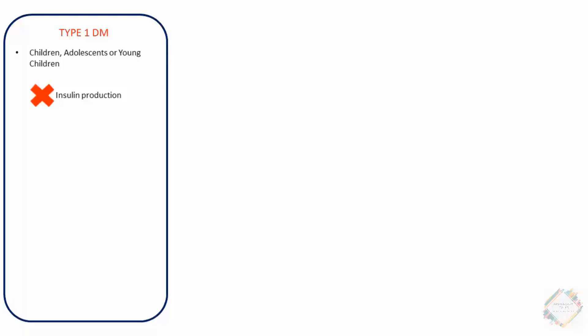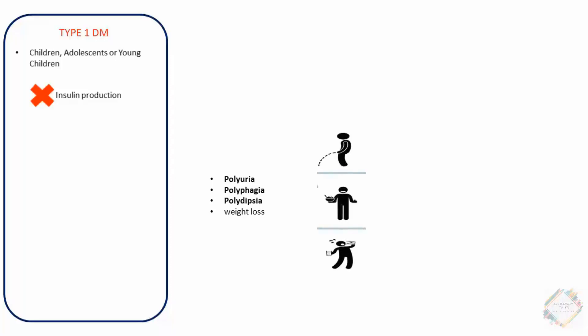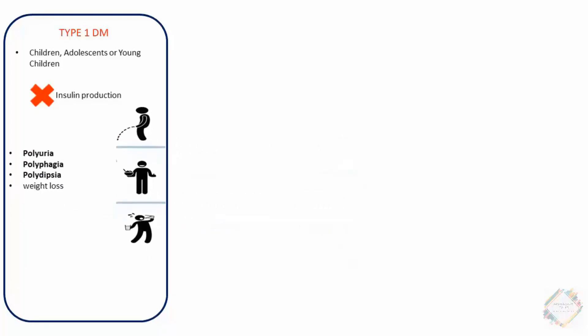The symptoms of Type 1 Diabetes Mellitus include notable weight loss — patients tend to be very lean. The other symptoms are the three Ps: polyuria (increased urination), polyphagia (increased hunger), and polydipsia (increased thirst). These are the basic symptoms seen in Type 1 Diabetes Mellitus.